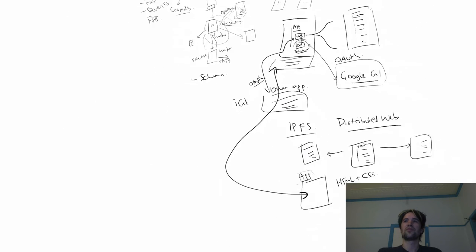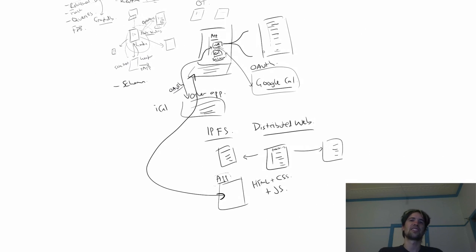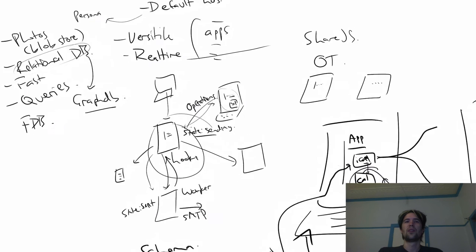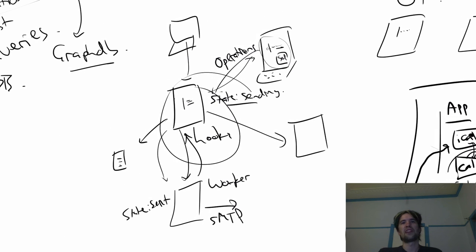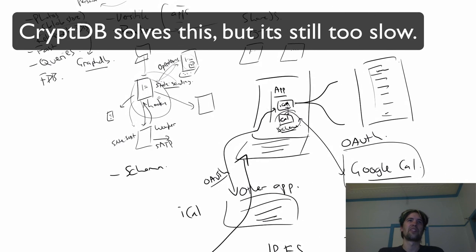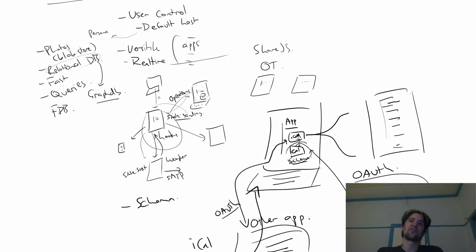Obviously there are some problems — there are trust problems here. There's nothing stopping a website from taking my data and uploading it somewhere else. But I think that's a solvable set of problems, something we can approach and attack. This isn't the perfect thing — it'd be really sweet to have full end-to-end encryption on this database so I'm the only one with the keys. But honestly, for most users for now, that's probably going to be impractical. Maybe that's something we could add in later when the technology is a little more advanced.